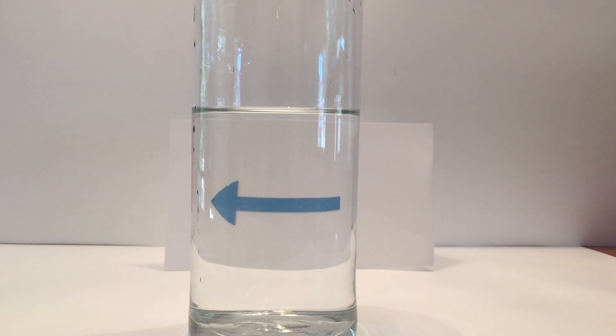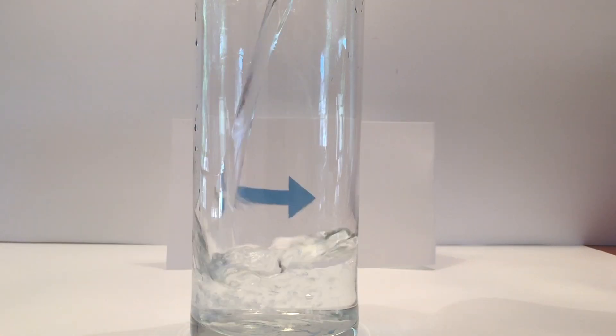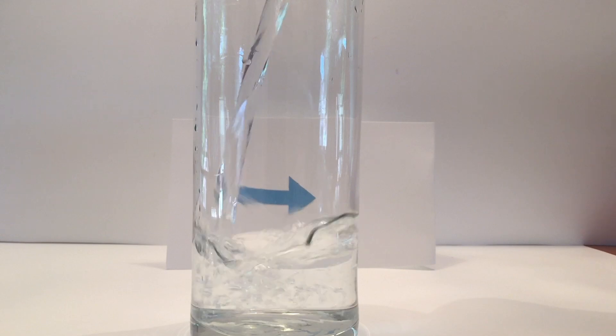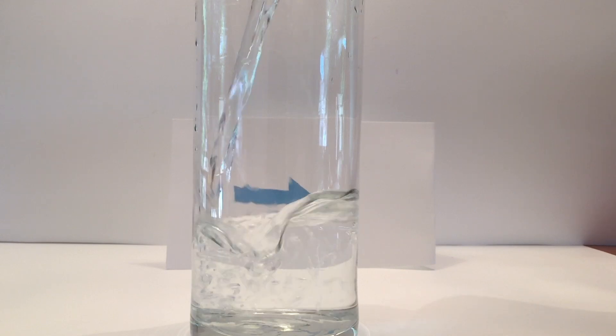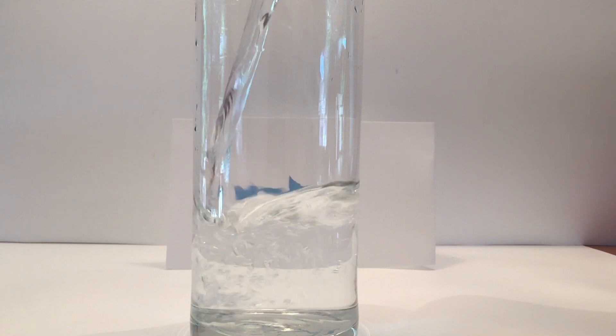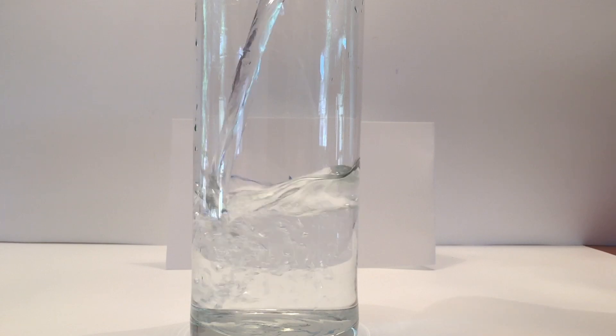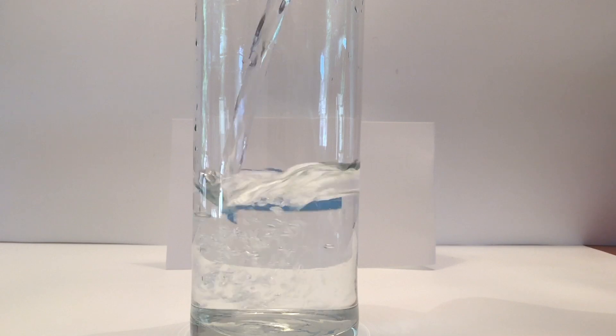When light passes from one material to another, it can bend or refract. In this experiment I just completed, the light traveled from the air through the glass, through the water, back through the glass, and then back through the air before it hit the arrow.